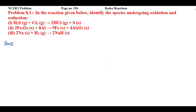The first problem is H₂S (hydrogen sulfide) plus chlorine gives rise to HCl (hydrogen chloride) plus sulfur. Elements in their molecular state or atomic state always have zero oxidation state. Chlorine is in its molecular state and sulfur is in its atomic state, so both will have zero oxidation state.